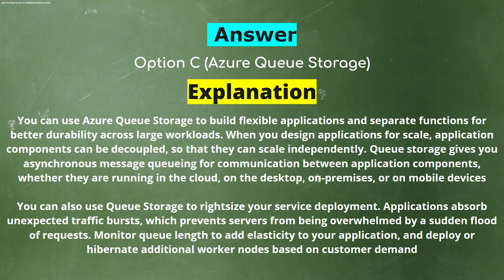Explanation: Azure Queue Storage lets you build flexible applications and separate functions for better durability across large workloads. Application components can be decoupled so they can scale independently. Queue Storage gives you asynchronous message queuing for communication between application components whether running in the cloud, on the desktop, on-premises, or on mobile devices. You can also use Queue Storage to right-size your service deployment: applications absorb unexpected traffic bursts, preventing servers from being overwhelmed by a sudden flood of requests. Monitor queue length to add elasticity and deploy or hibernate additional worker nodes based on customer demand.